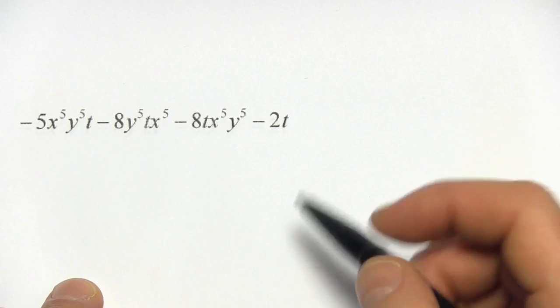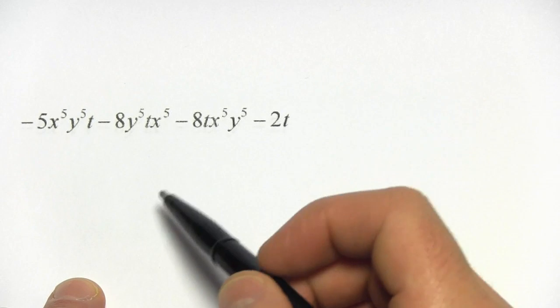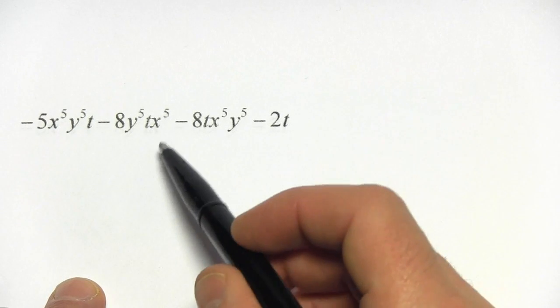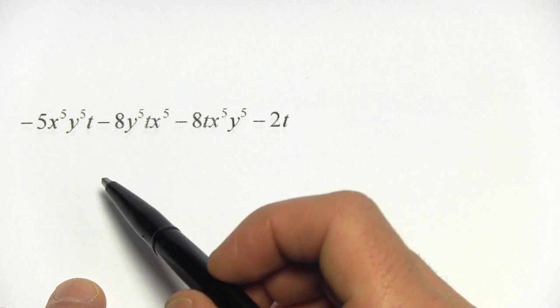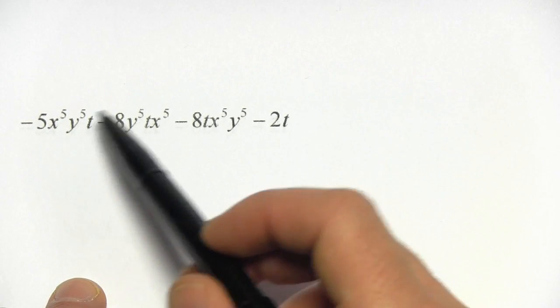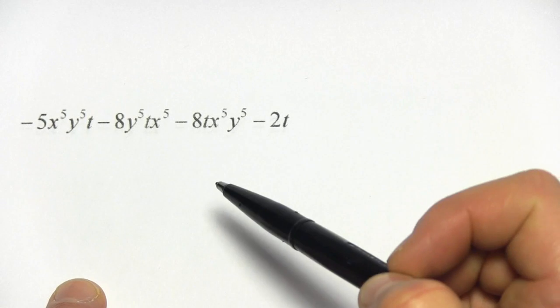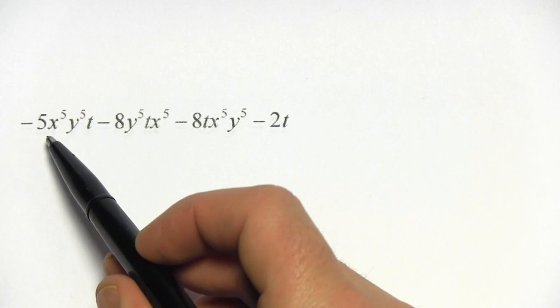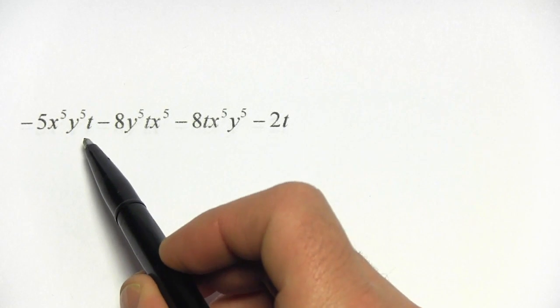This one is also a little tricky because they are switching around the order of the letters here. As long as the letters are the same with the same powers, they're like terms no matter what order the letters appear in. So let's look at this one carefully. We have x to the 5th, y to the 5th, t.